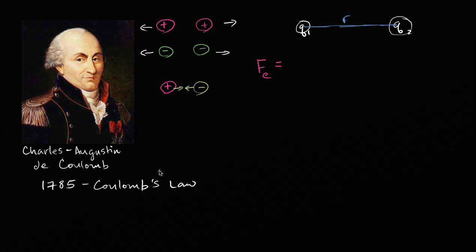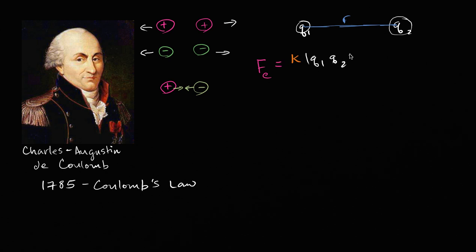Coulomb tested this — he didn't just guess. People were already assuming it had something to do with the products of the magnitudes of the charges and that the force dissipated as particles moved farther apart. He was able to actually measure this and state the law: the magnitude of the electrostatic force is proportional to the absolute value of the product of the charges, Q1 times Q2, and inversely proportional to the square of the distance between them, R².